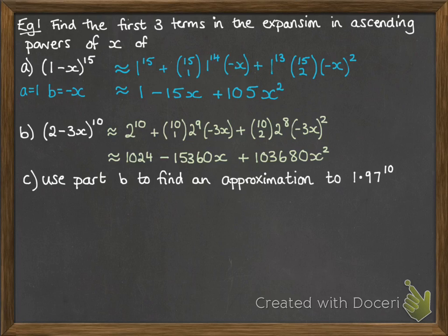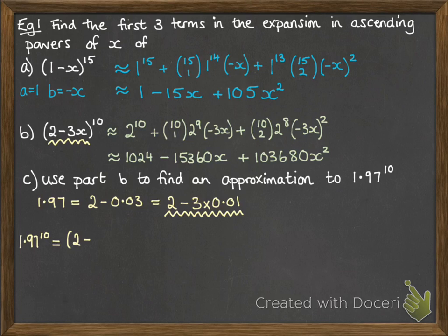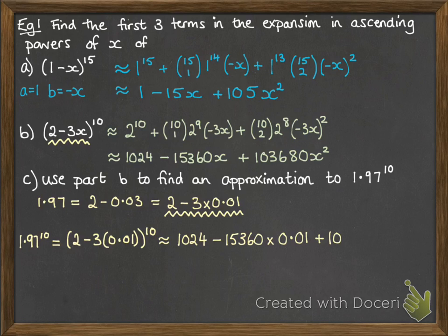Okay, now you can be asked to take this one step further. Use part b to find an approximation to 1.97 to the 10. Okay, so 1.97, we want to make it the same as what we had in b. So this is the same as 2 minus 0.03, which is the same as 2 minus 3 times 0.01. Now you can see that is in the same form as the 2 minus 3x that we had, where x is 0.01. Okay, so now we can put it into our expansion. So we just need to take that expansion that starts there in the green with the 1,024 and put in our value of x, which is 0.01. And then work out what that would be and we get 881 to 3 significant figures.